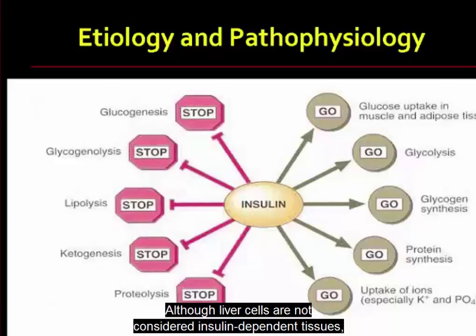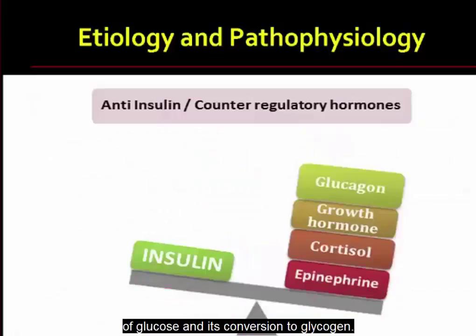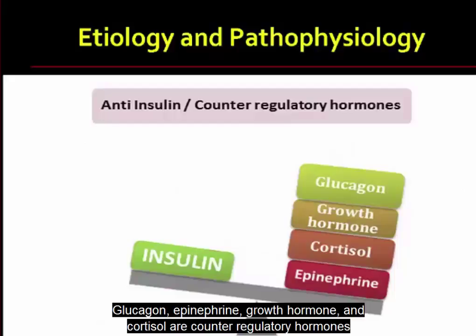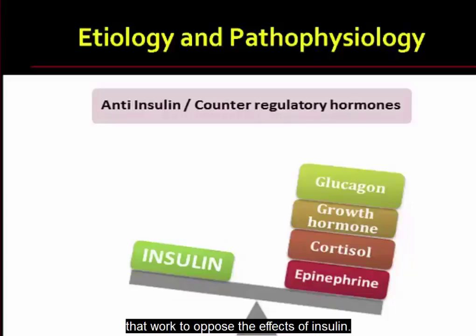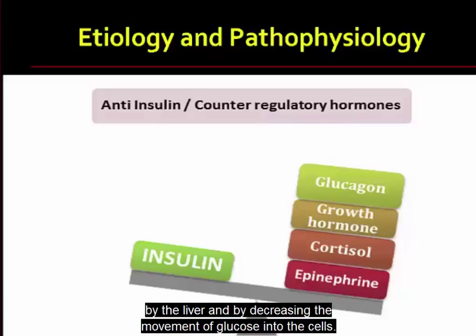Although liver cells are not considered insulin-dependent tissues, insulin receptor sites on the liver facilitate the hepatic uptake of glucose and its conversion to glycogen. Glucagon, epinephrine, growth hormone, and cortisol are counter-regulatory hormones that work to oppose the effects of insulin. These hormones increase blood glucose levels by stimulating glucose production and output by the liver, and by decreasing the movement of glucose into the cells.